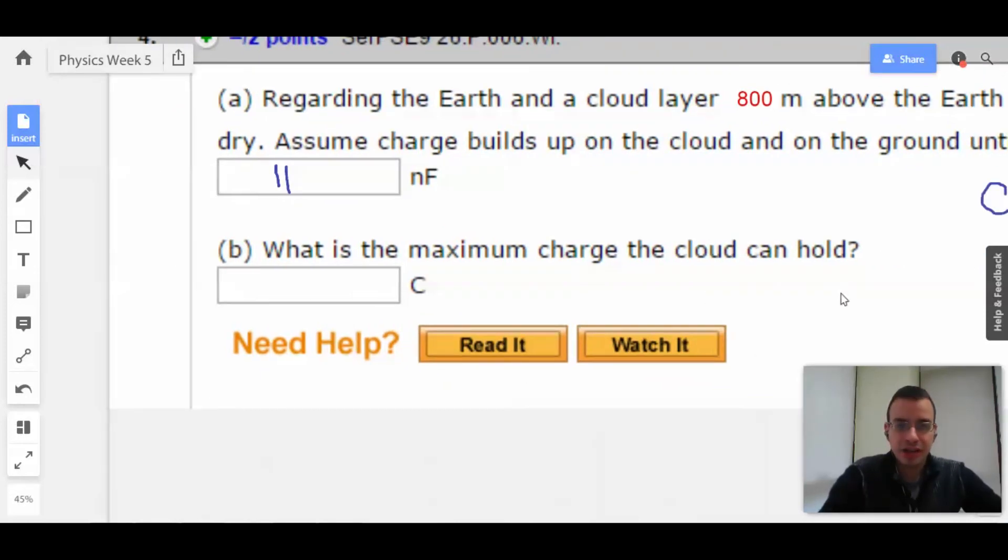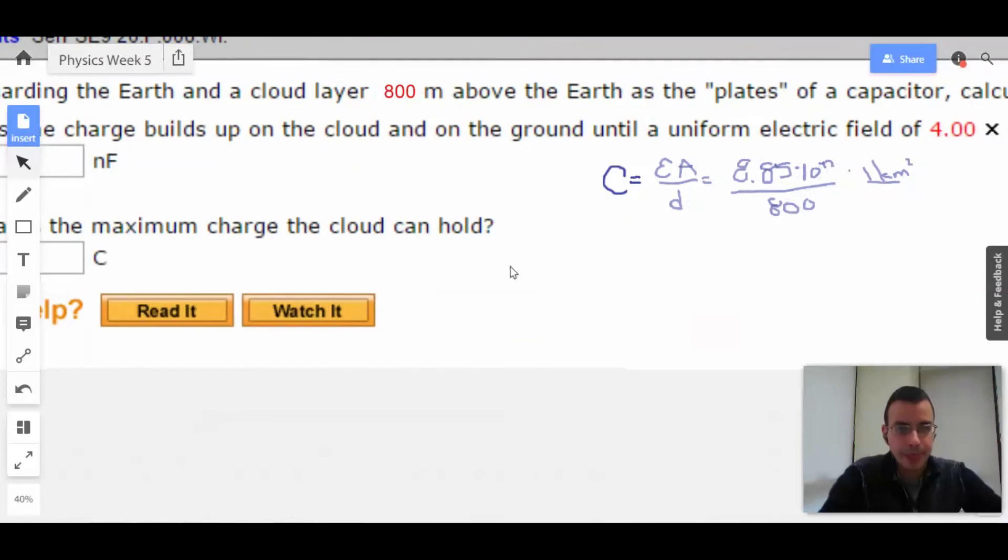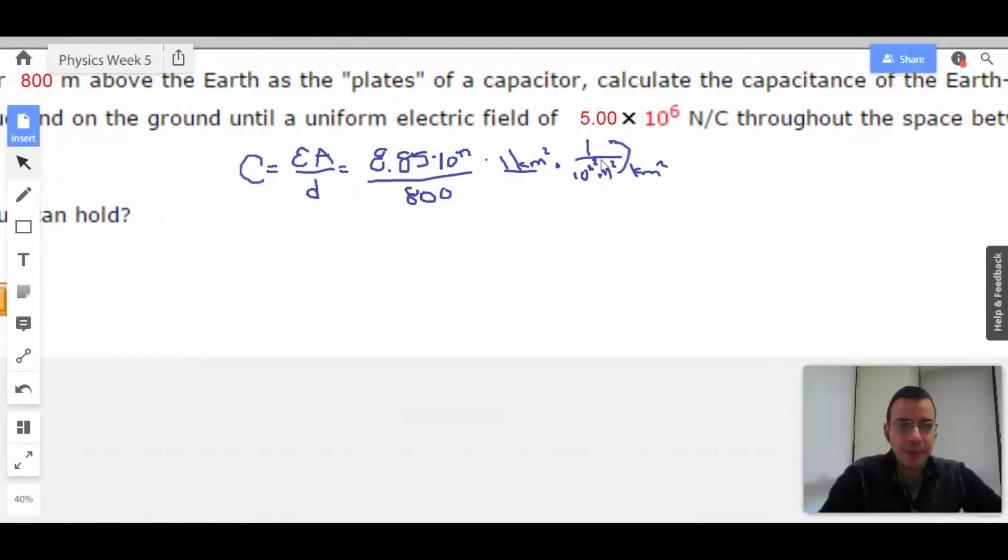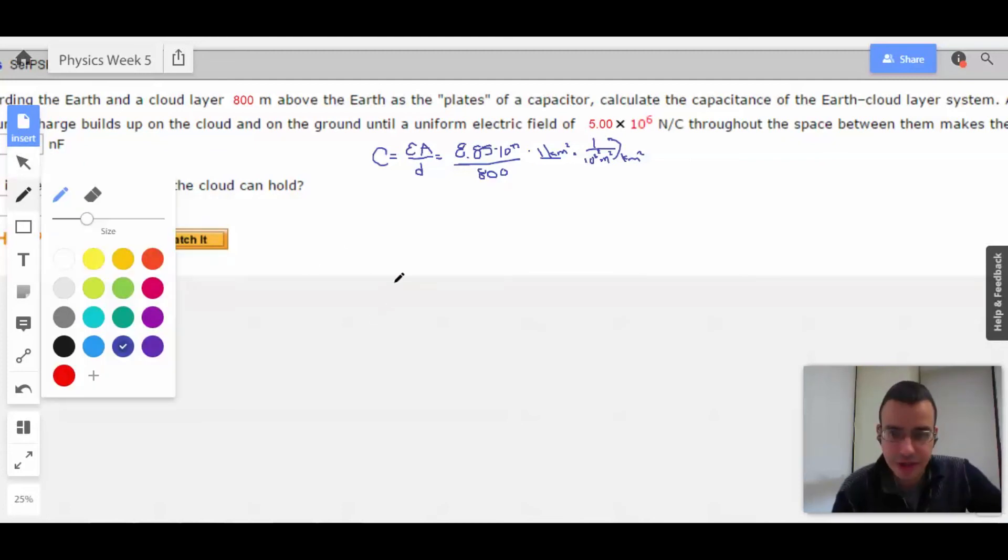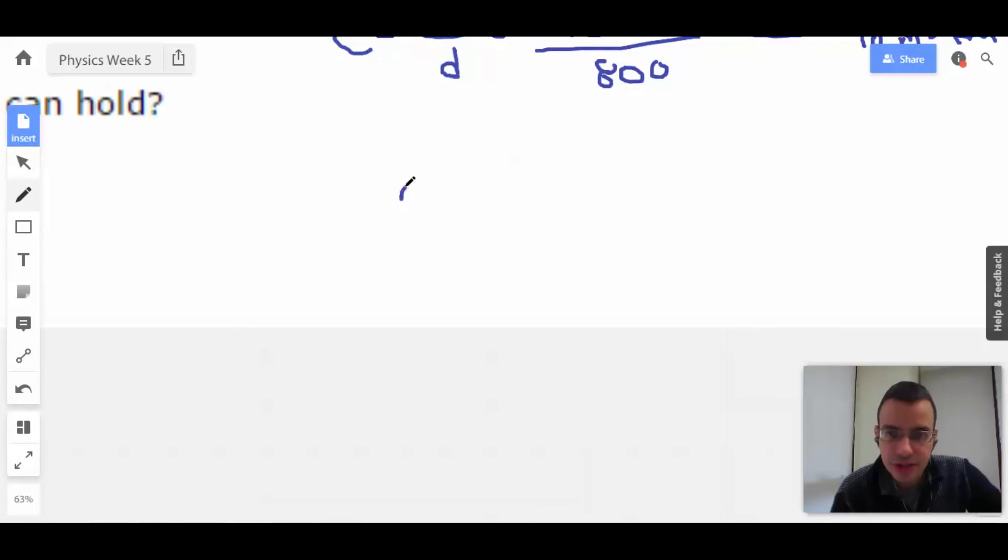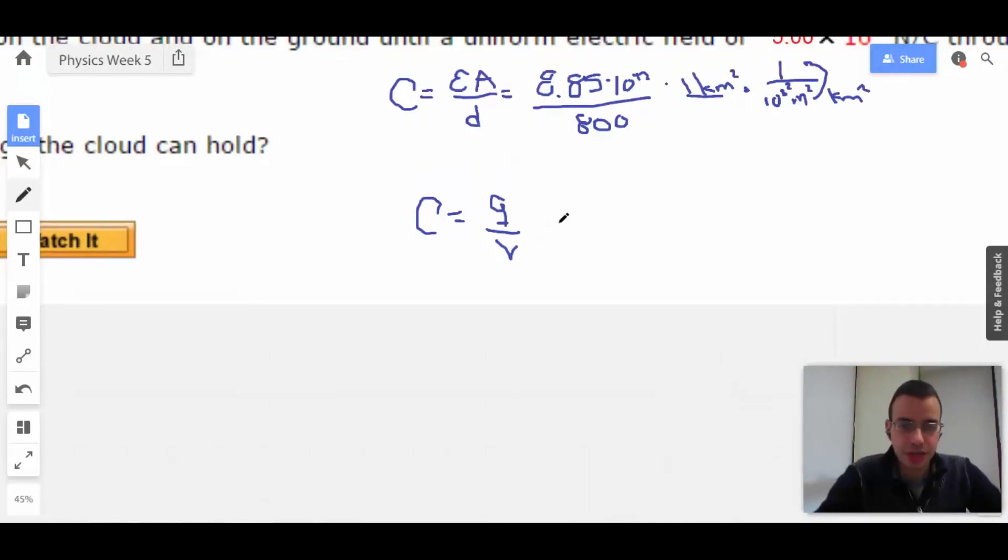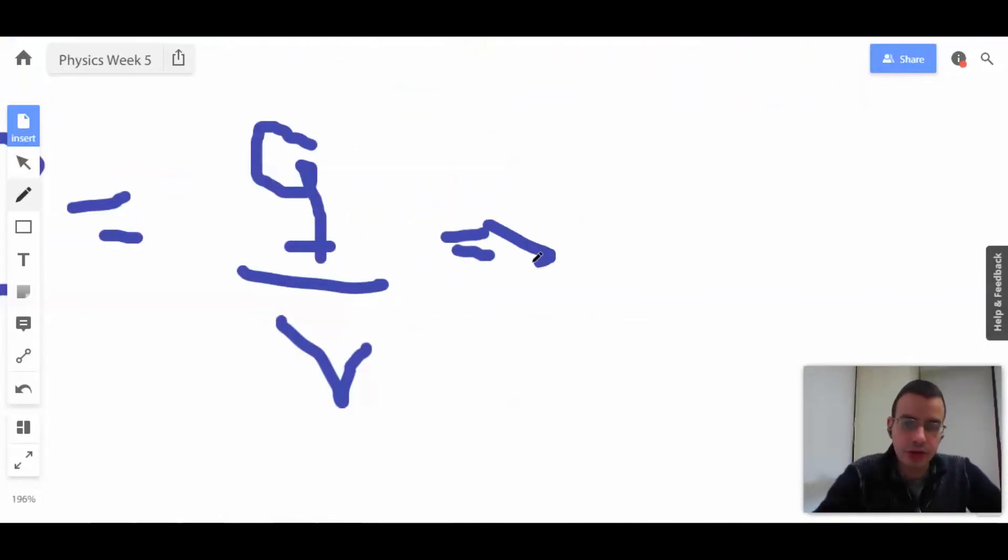What is the maximum charge the cloud can hold? Okay, so they told us something about the electric field. So this is going to be the electric field we can have. We need to convert that electric field to a voltage. So here I'm going to use the definition of capacitance: C equals Q over V. So rearranging this, we're going to have Q equals CV.